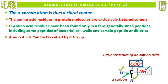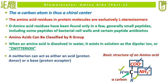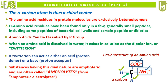Amino acids can be classified by R group. When an amino acid is dissolved in water, it exists in solution as the dipolar ion, or zwitterion. A zwitterion can act as either an acid — that is, a proton donor — or as a base — that is, a proton acceptor. Substances having this dual nature are amphoteric and are often called ampholytes. The word ampholytes is derived from amphoteric electrolytes.